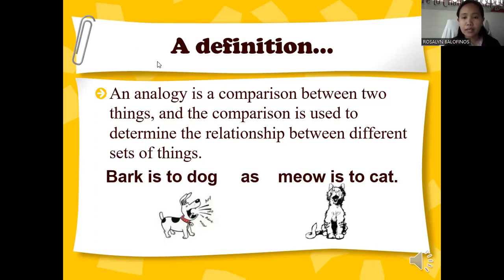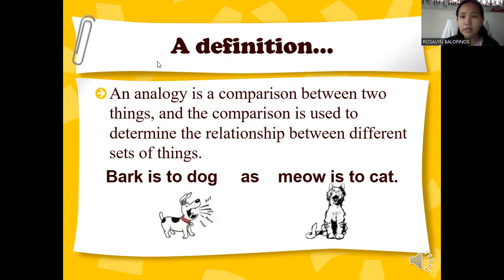Now, what if 'cat' comes before 'meow' — will there still be an analogy? The answer is no, because it no longer follows the format given in the first pair. When we say analogy, there should be a consistent determining relationship. If the first pair follows the pattern of sound then animal, the second pair should also be sound then animal.